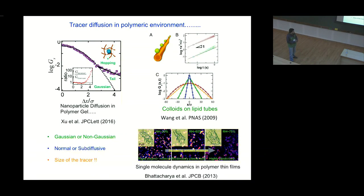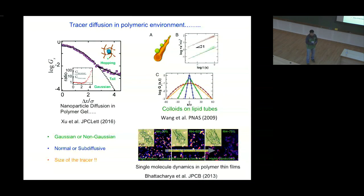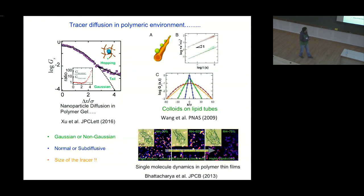I also want to mention this work done by my colleague at IIT Bombay, who looked at single molecule dynamics in polymer thin films, and they could see similar things — the diffusion is normal but the displacement distribution is non-Gaussian. So this is not very uncommon. The key questions are: whether the dynamics is Gaussian or non-Gaussian, whether it is normal or sub-diffusive — meaning whether the mean square displacement scales linearly or fractionally with time — and also what happens if I change the size of the tracer.